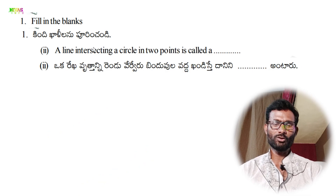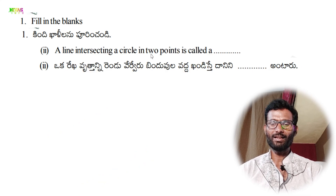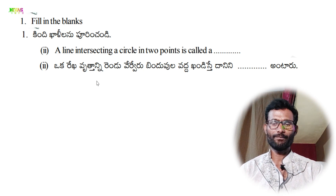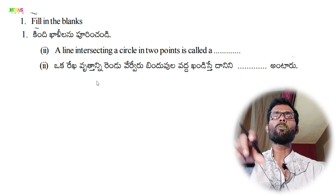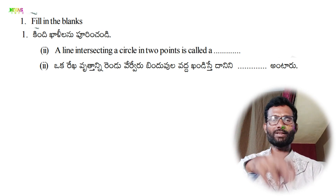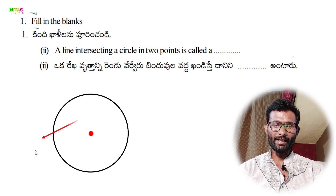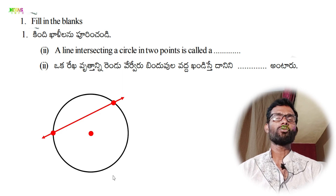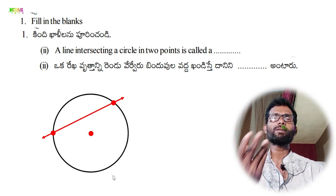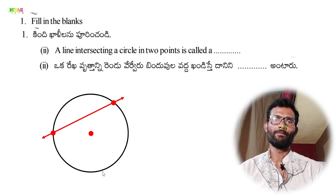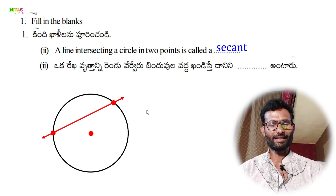Next, second one: a line intersecting a circle in two points is called a dash. If we draw a line through the circle, it intersects at two points. This is called a secant.